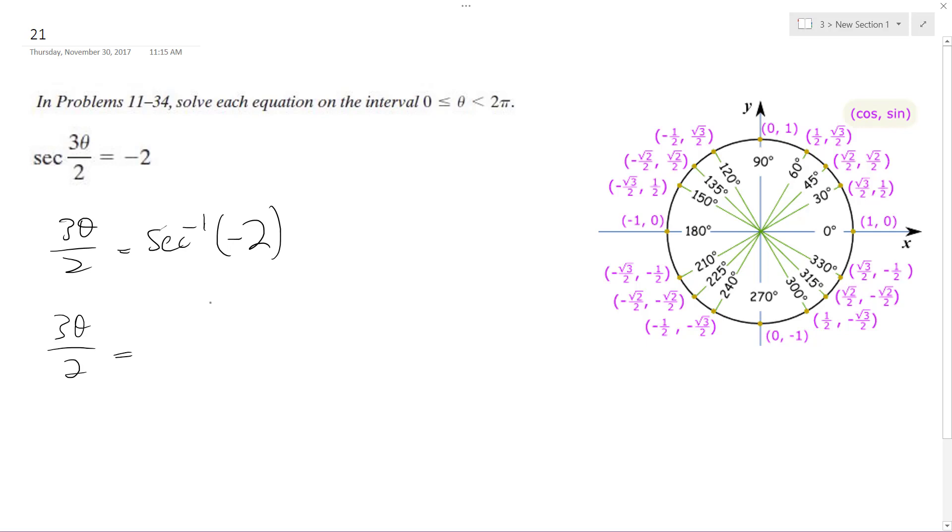Secant inverse of negative 2 is essentially cosine inverse of negative one half, which gives 2 pi over 3 and 4 pi over 3.